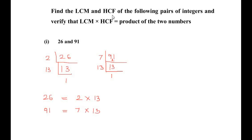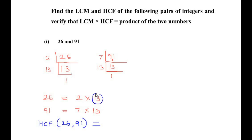Now let us find out the HCF, or highest common factor, of these two numbers. For the HCF of 26 and 91, we circle out the common terms. The common term present in both 26 and 91 is 13. So the HCF is 13.